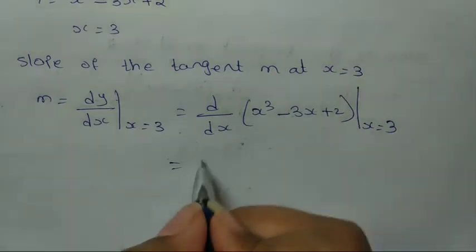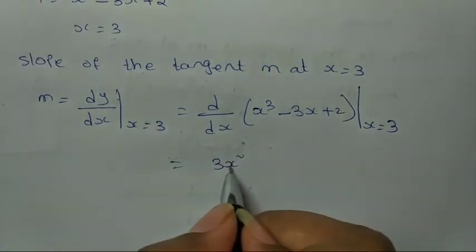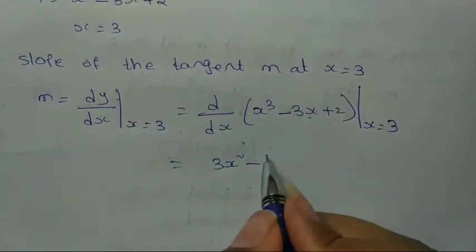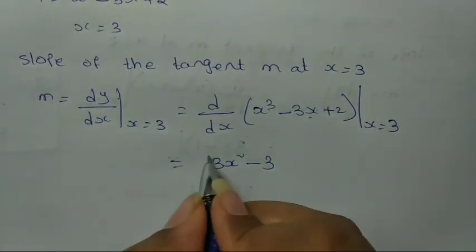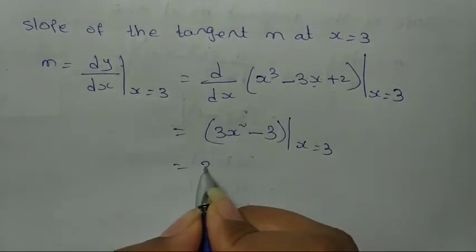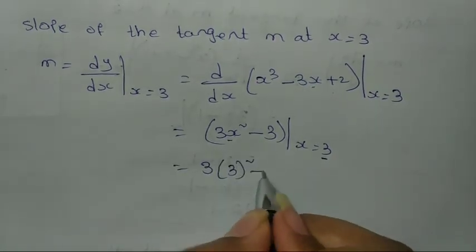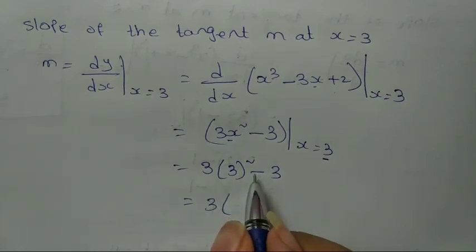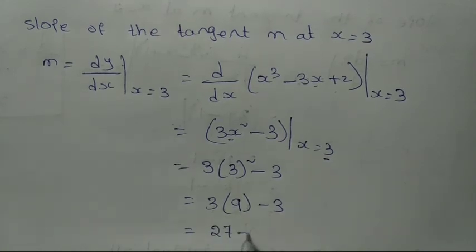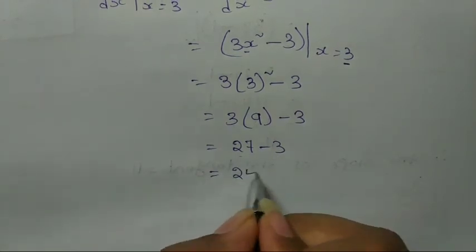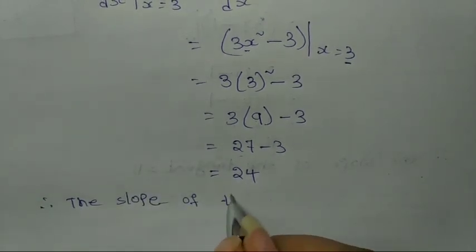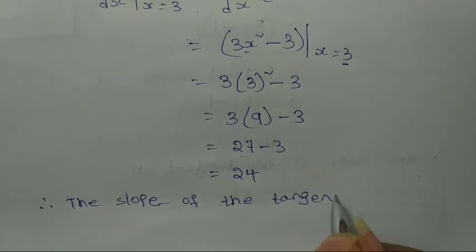Derivative of x³ is 3x² using n·xⁿ⁻¹, and derivative of 3x is 3. So dy/dx = 3x² − 3. At x = 3: 3(3²) − 3 = 3 × 9 − 3 = 27 − 3 = 24. Therefore the slope of the tangent is equal to 24.